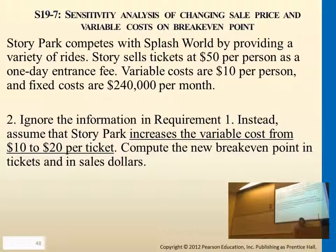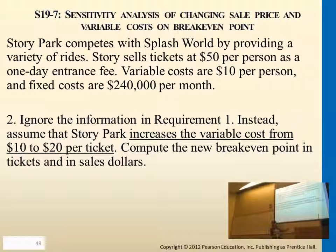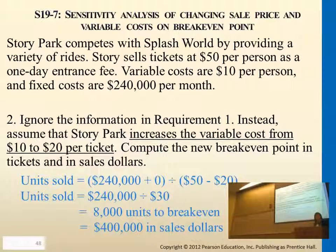Okay, anybody got the break-even units and sales? Same 8,000 units. But what about sales in dollars? $400,000 — you got it. You'll multiply by 50, exactly, because we didn't change the $400,000. So you will need to calculate this by the new contribution margin ratio, which is 50 minus the new variable cost of 20, so it's 30. We divide it by the same fixed cost of $240,000, giving you the same 8,000 units, and then you multiply that by $50 per ticket.